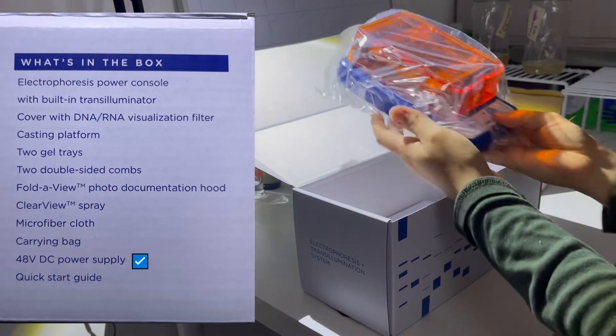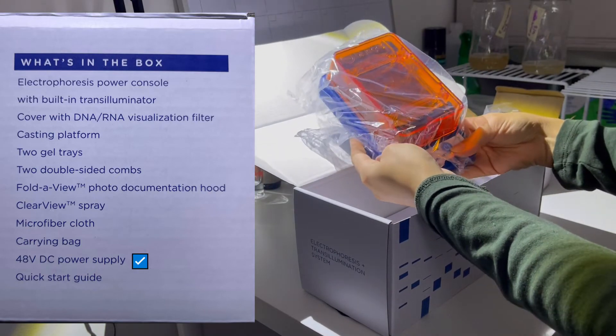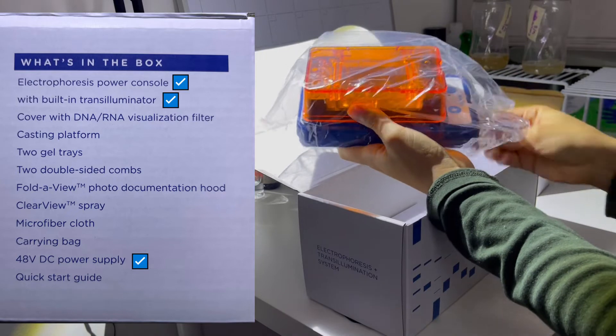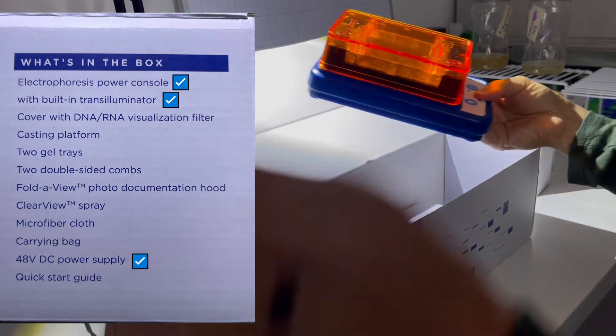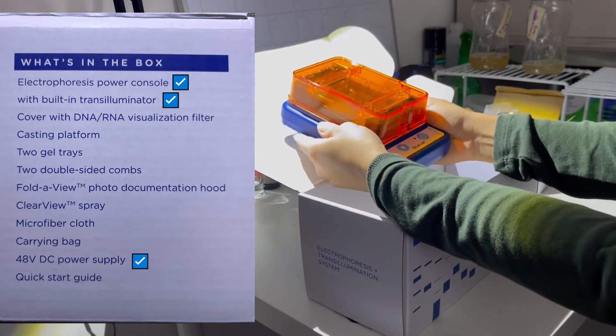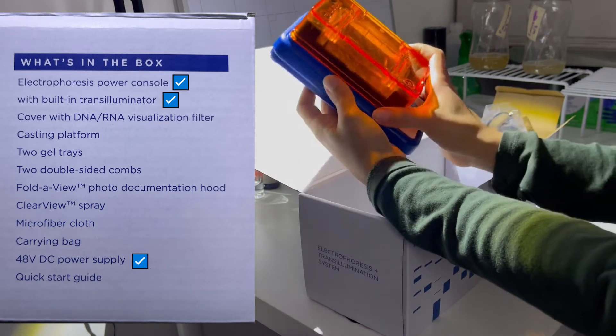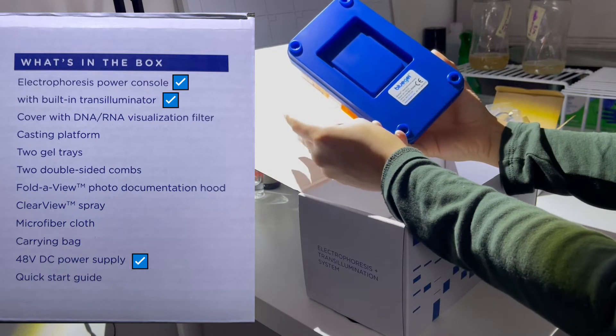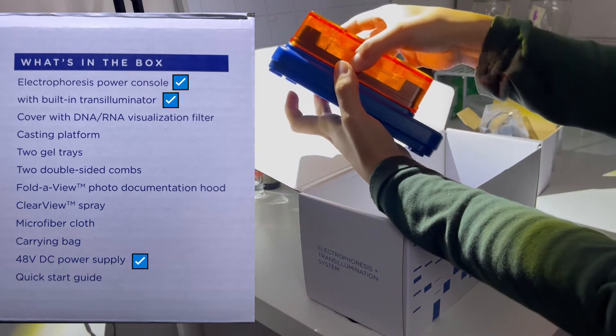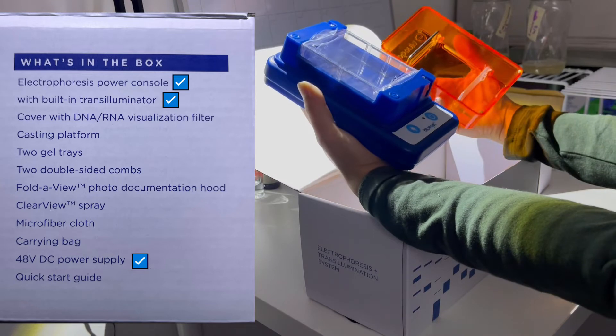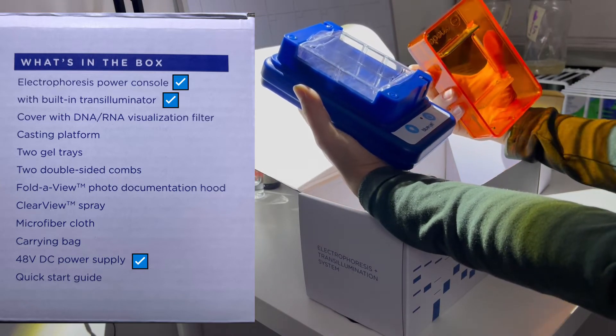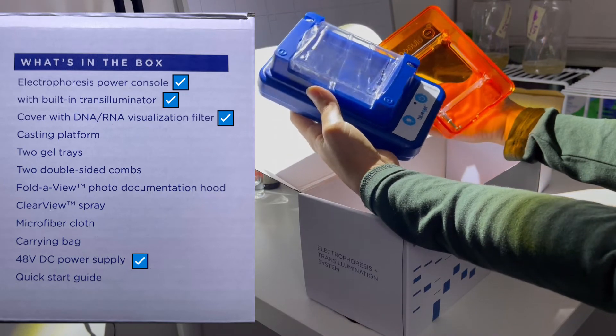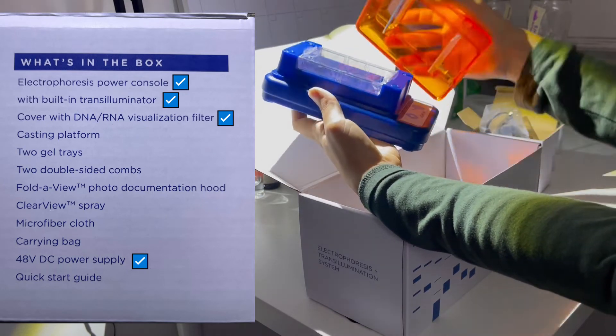And here's the machine itself. Nice. It's actually pretty light, lighter than I thought. It's really small, I like it. And I'm guessing this orange covering is what they call the visualization filter so you can view the DNA or RNA bands. Cool.